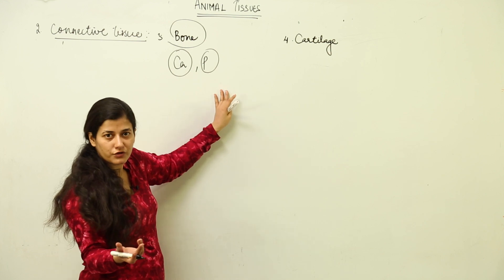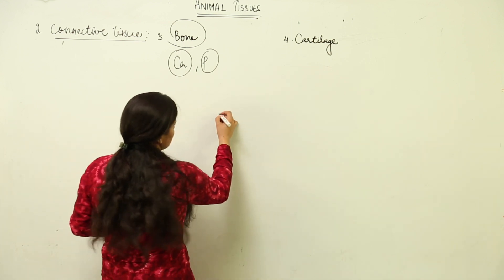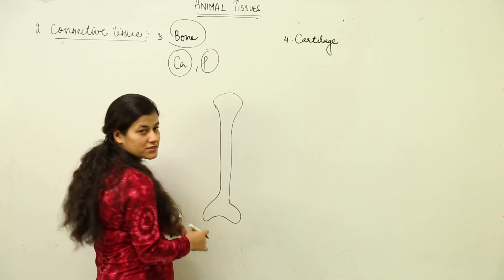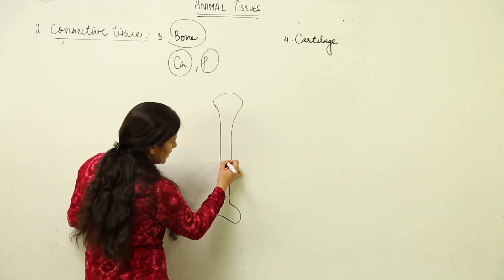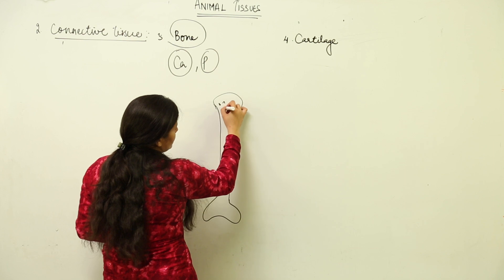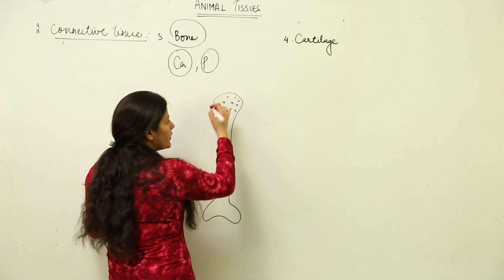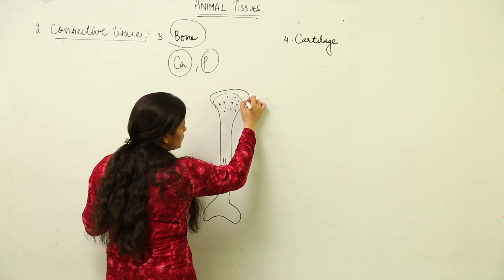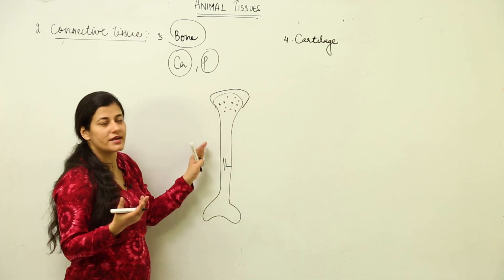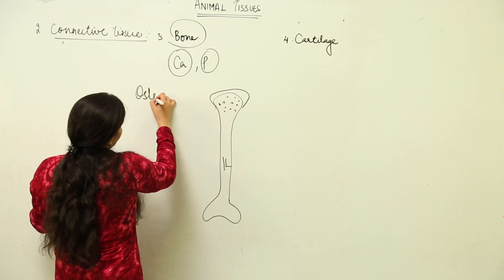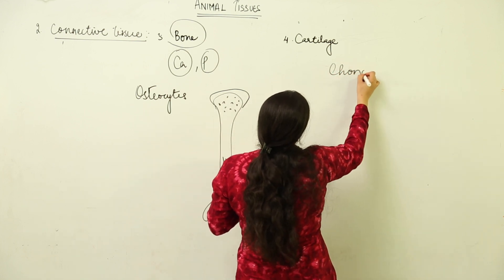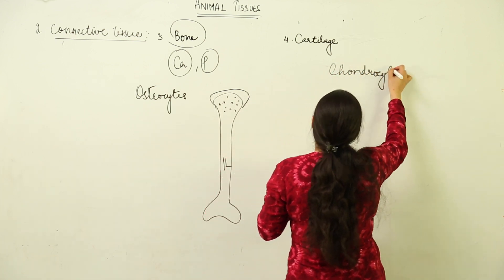Cartilage is a soft bone. If we cut a transverse section of bone, there is a canal inside with cells arranged in it and a matrix rich in calcium and phosphorus. On top of this bone, there is cartilage. In cartilage, the cells are called chondrocytes, unlike the osteocytes found in bone.